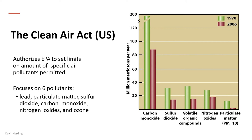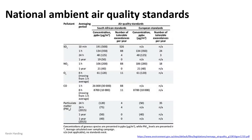Looking at the data from 1970 compared to 2006 after the Clean Air Act took effect: sulfur dioxide dropped by about half, organic chemicals dropped by about half, NOx by slightly less than half, particulate matter decreased by more than half, and carbon monoxide went from about 200 to under 100 — also more than halved. South Africa has a similar regulation: the National Ambient Air Quality Standards.